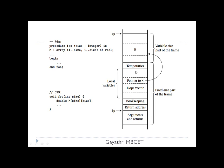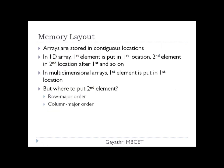The fixed size part holds variables whose size is known at compile time — arguments, return values, return address, bookkeeping information, and temporaries. The variable size part holds objects whose size is not known at elaboration time. Array m is placed in the variable size part of the frame, with a pointer to m and its dope vector at the fixed size part. The stack pointer points to the top of the stack and the frame pointer points somewhere inside the stack.